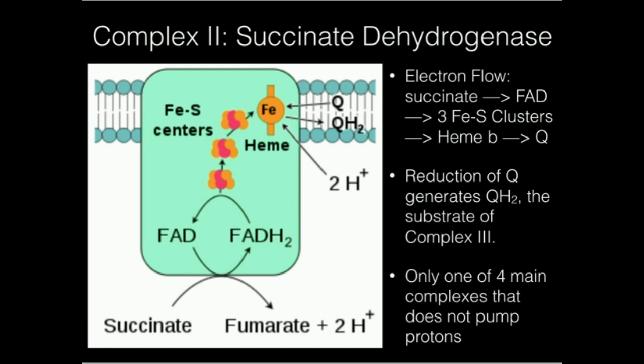Now, although two protons are taken from the matrix and incorporated into the coenzyme Q, there is no net pumping of protons by complex II. In fact, out of the four main complexes we're going to talk about, the only one of them that does not pump protons is this one, succinate dehydrogenase.